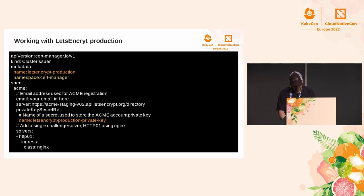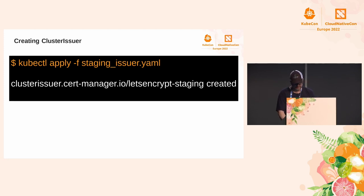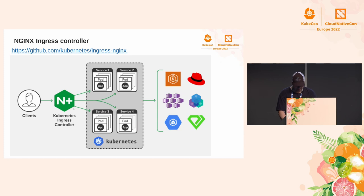With that change we can use the same configuration for production. With the previous configuration file we can use the kubectl command to implement this ClusterIssuer. At this point we have created our ClusterIssuer and we are ready to introduce the ingress controller.